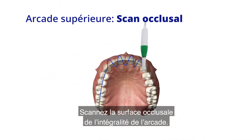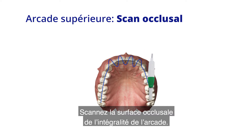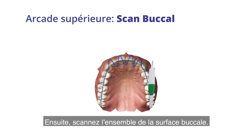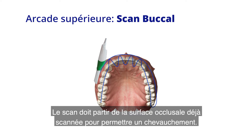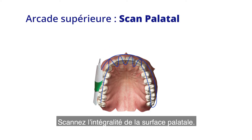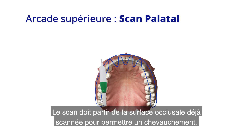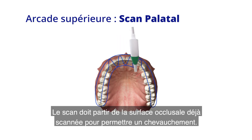Scan the occlusal surface of the entire arch. Next, scan all of the buccal. The scan should continue from the occlusal surface already scanned and overlap with it. Then scan all of the palatal. The scan should continue from the occlusal surface already scanned and overlap with it.